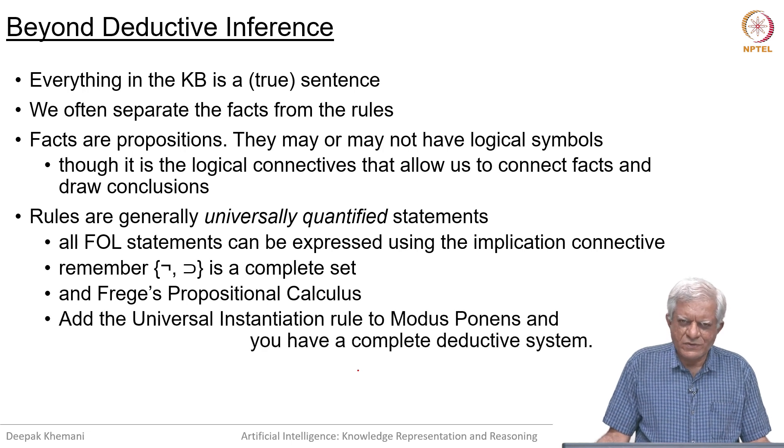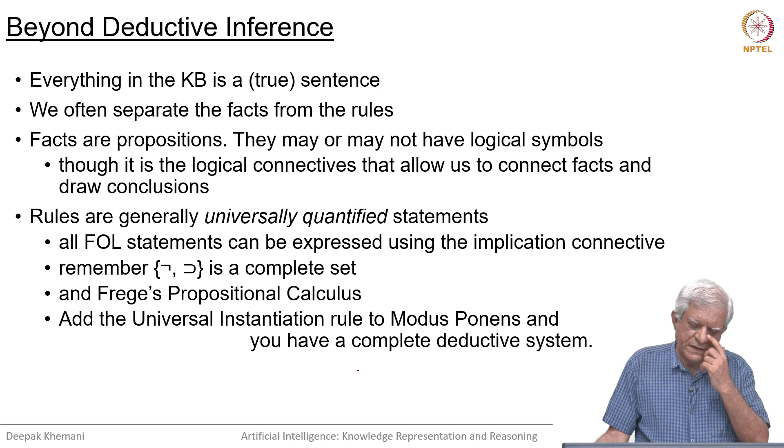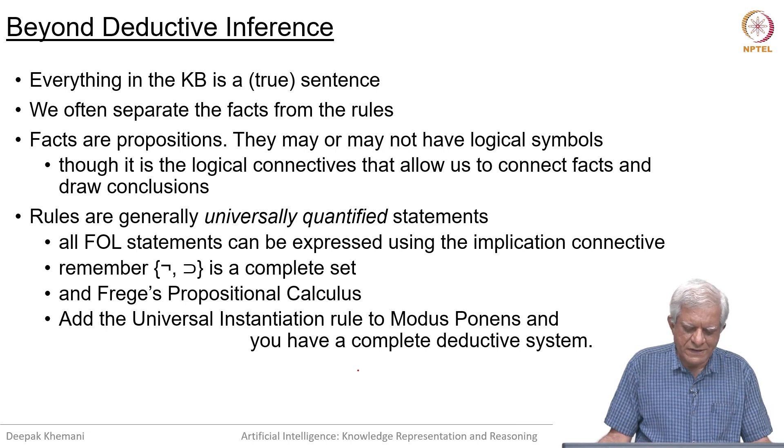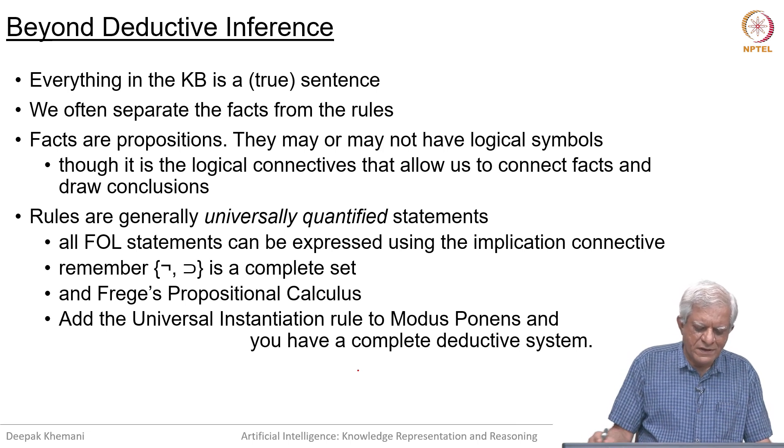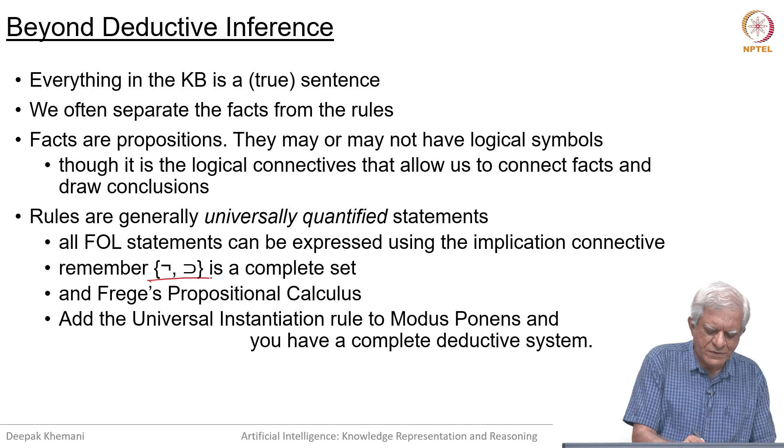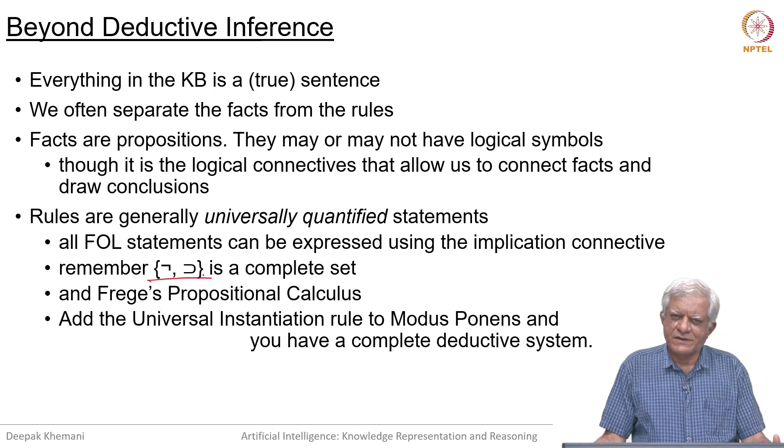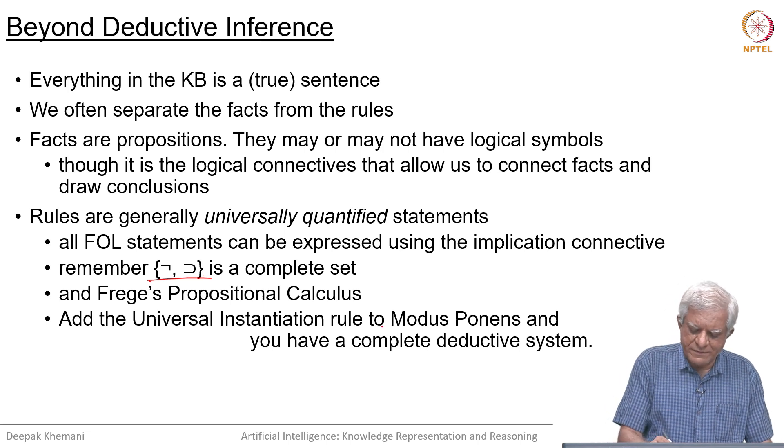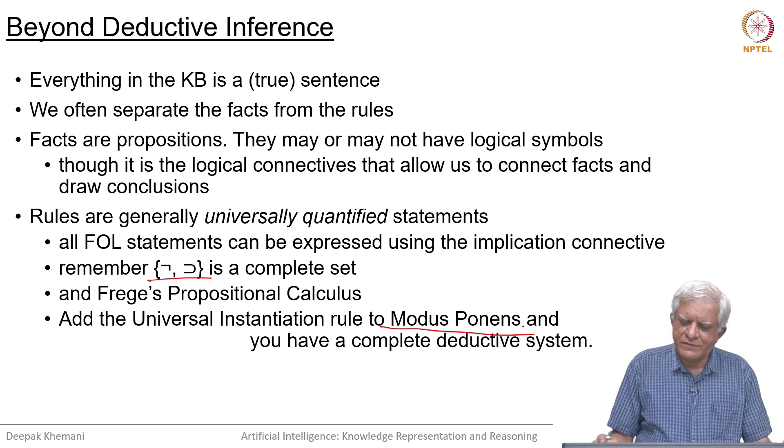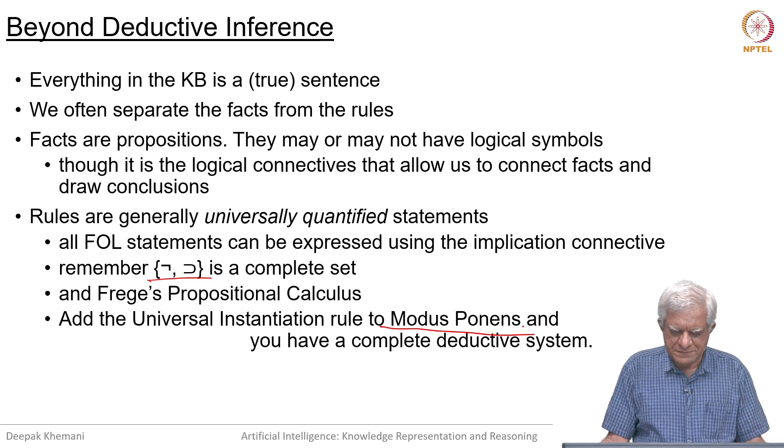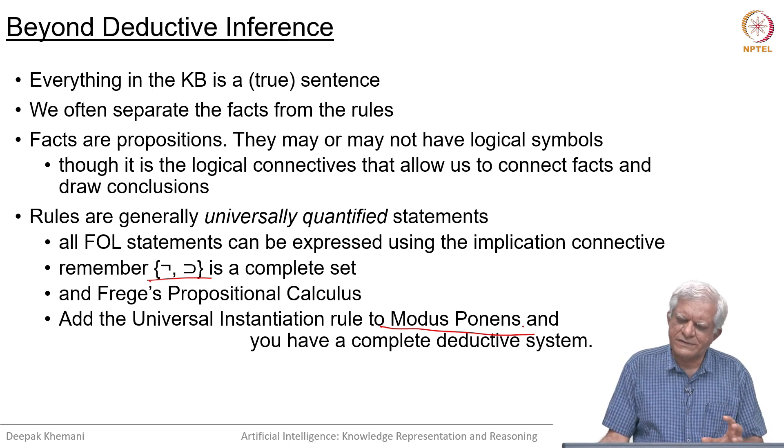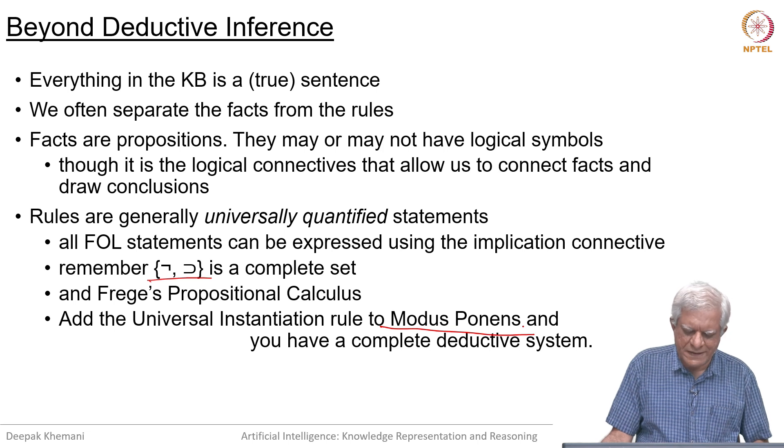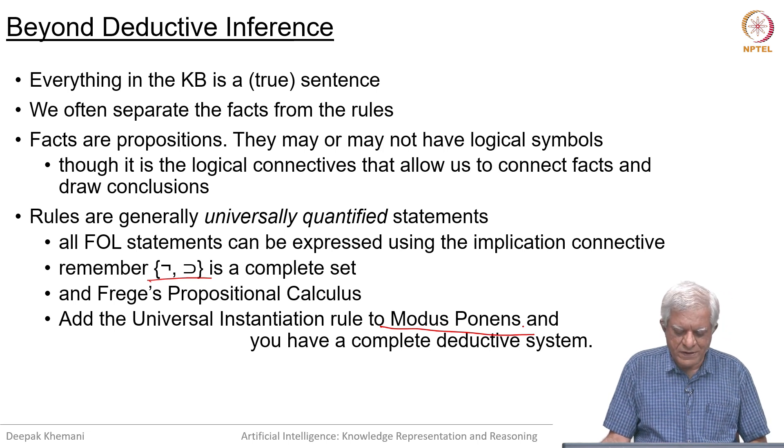The inferences are made using rules and rules are in first order logic, at least universally quantified statements. We have seen that we can reduce first order logic into a logic which works only with the implication statement. We have shown, for example, in Frege's propositional calculus that the set of connectives of negation and implication is a complete set and with using modus ponens we can build a complete logical system. We will focus on rules which are implications as we have been doing quite a bit.